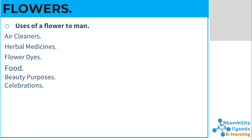Flowers can be used as dyes. Color is basically produced from flowers, and there are some flowers that are planted specifically to get color and dye. Some flowers are also edible — not all, but some flowers are eaten and are used as food among different communities.